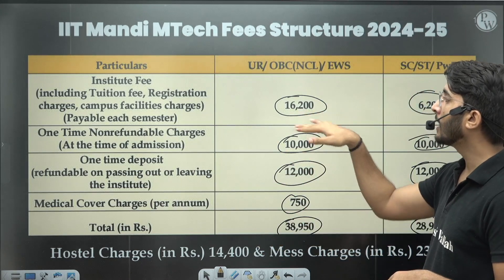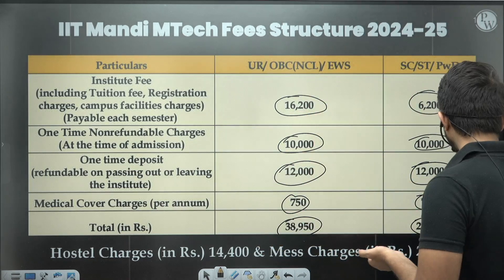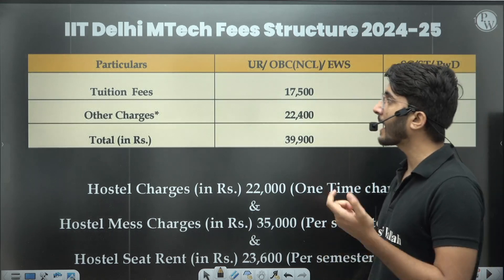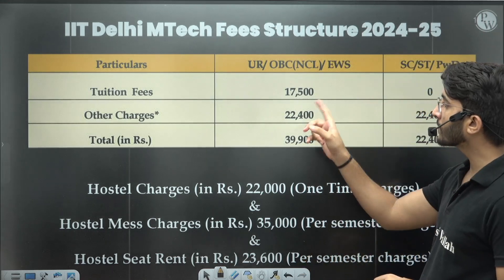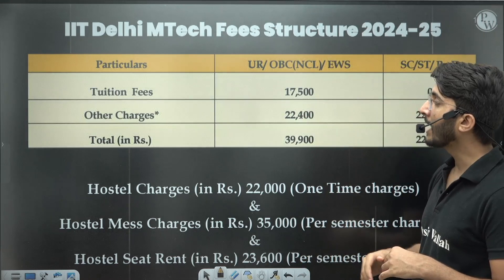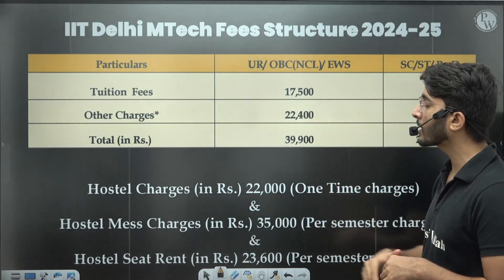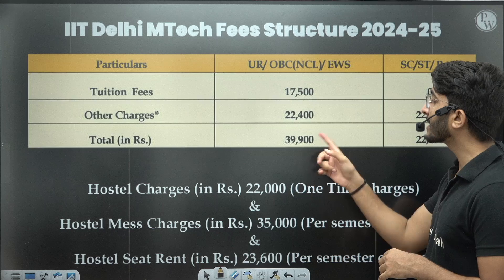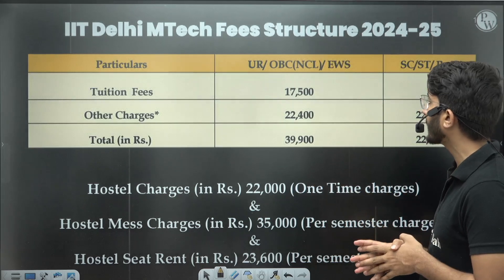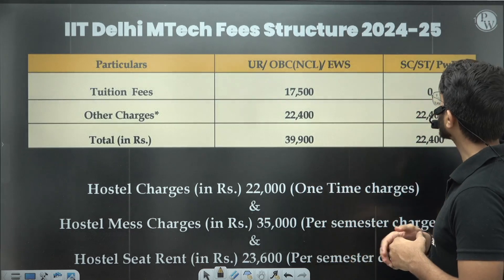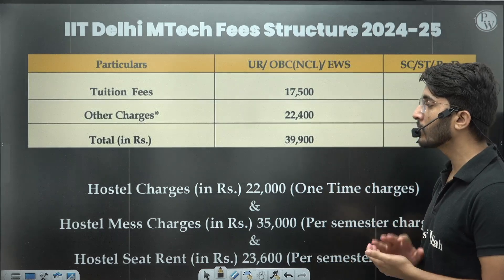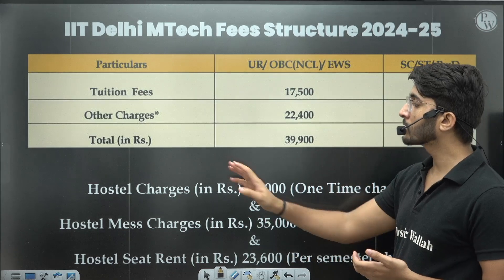If we talk about IIT Delhi MTech fees structure, tuition fees is ₹17,500 and other charges are ₹22,400, making a total of ₹39,900 you need to pay if you belong to General, OBC, or EWS categories. For SC/ST/PwD, you need to pay ₹22,400.